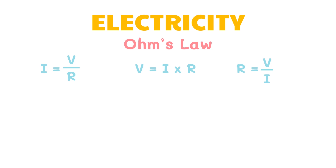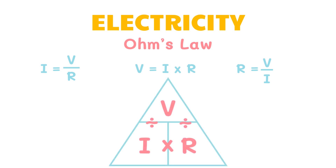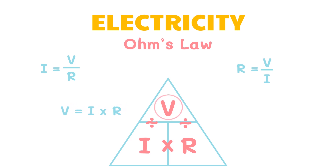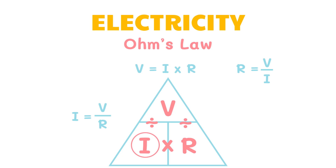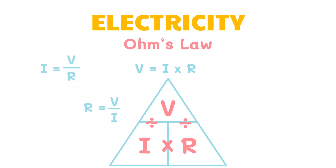To help you memorize these formulas, remember the Ohm's law triangle. With this triangle, you have memorized all three equations in one. To look for voltage, we can see the equation current times resistance below. To look for current, we can see the equation voltage divided by resistance on the right side. And lastly, to look for resistance, we can see the equation voltage divided by current on the left side. With this triangle, it will be easier to memorize the formulas in Ohm's law.